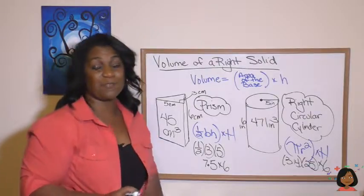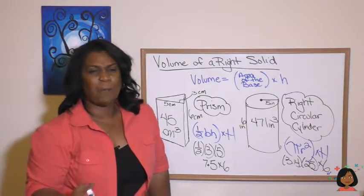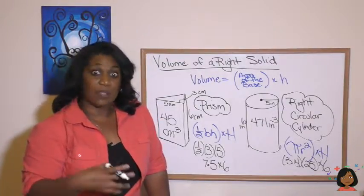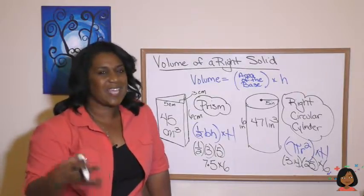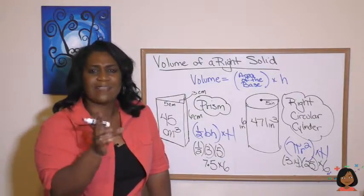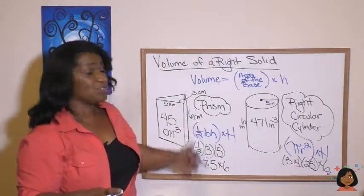It really is that simple. So again, we're using what we know about the rectangular prism length times width times height. But instead of saying length times width, we're saying, hey, find the area of the base.